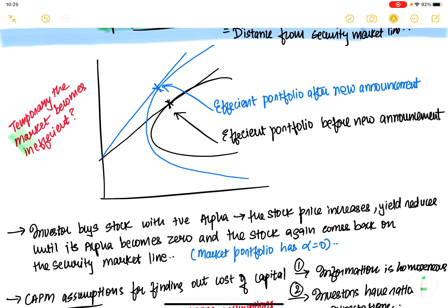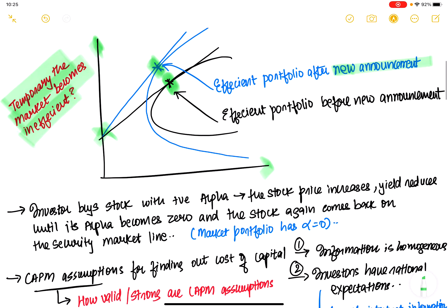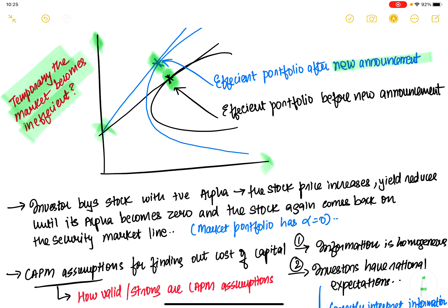Temporarily, markets do become inefficient. The efficient portfolio could shift with new information. When someone identifies a positive alpha stock, they start buying it. As more buyers emerge and fewer sellers remain, the stock price increases, the yield reduces, and eventually the alpha becomes zero over time. Even if there is positive alpha, it becomes zero because of price discovery. The market portfolio's alpha equals zero.